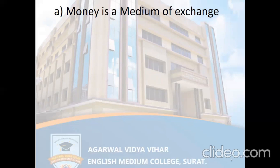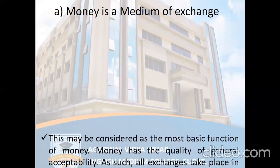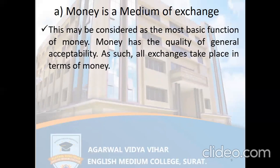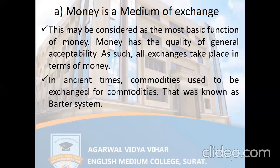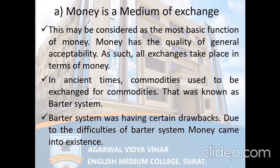Money as a medium of exchange may be considered the most basic function of money. Money has the quality of general acceptability, so all exchanges take place in terms of money. Today we exchange everything — goods, services, or anything — with the help of money. In ancient times, commodities used to be exchanged for commodities, that is the barter system. But this system had certain drawbacks, due to which money came into existence.